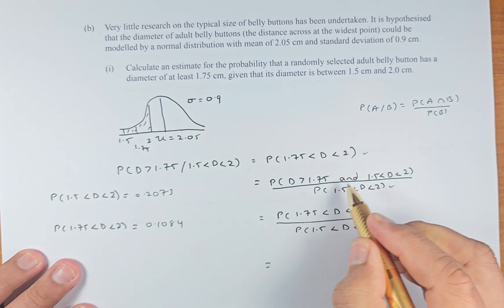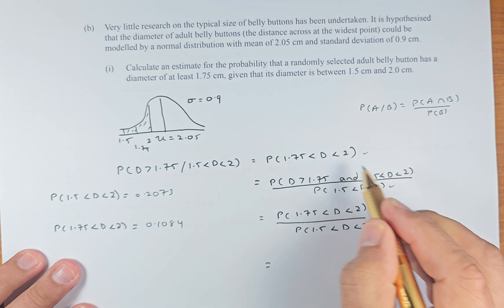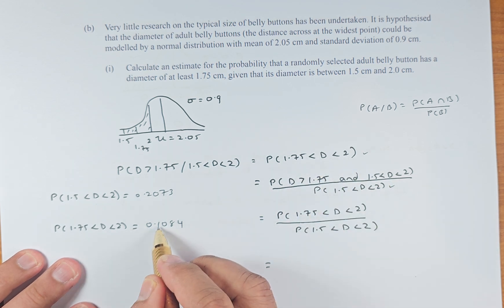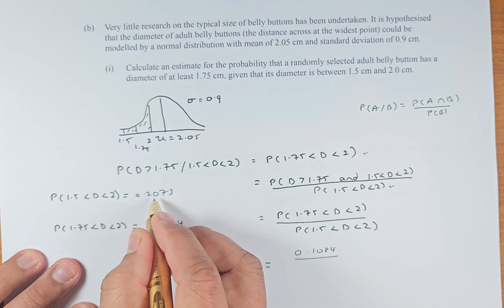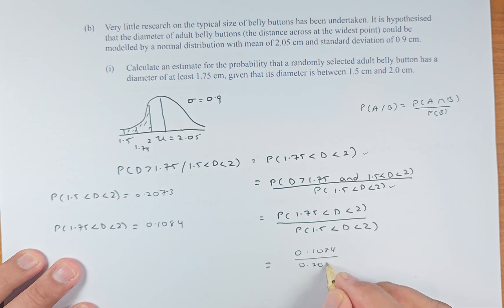So we know that the top part numerator is the same as between 1.75 and 2, which is this number here. It's going to be 0.1084. And the denominator is going to be this number here, 0.2073. And put in your calculator. And the answer is going to be, I've done before, 0.5279. You get the answer, you get the merit.